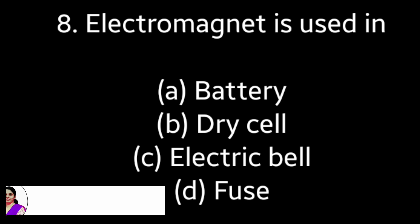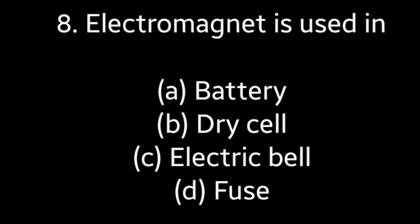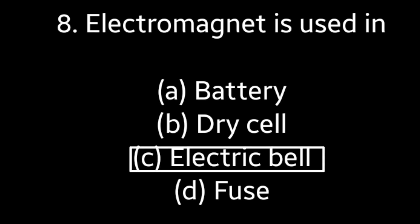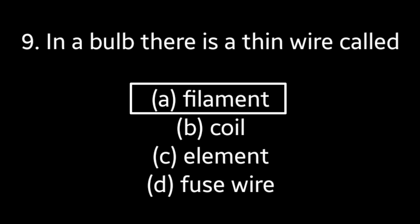Question No. 8: Electromagnet is used in — Battery, Dry cell, Electric bell, Fuse. Answer is Option C: Electric bell. Question No. 9: In a bulb, there is a thin wire called — Filament, Coil, Element, Fuse wire. Answer is Option A: Filament.